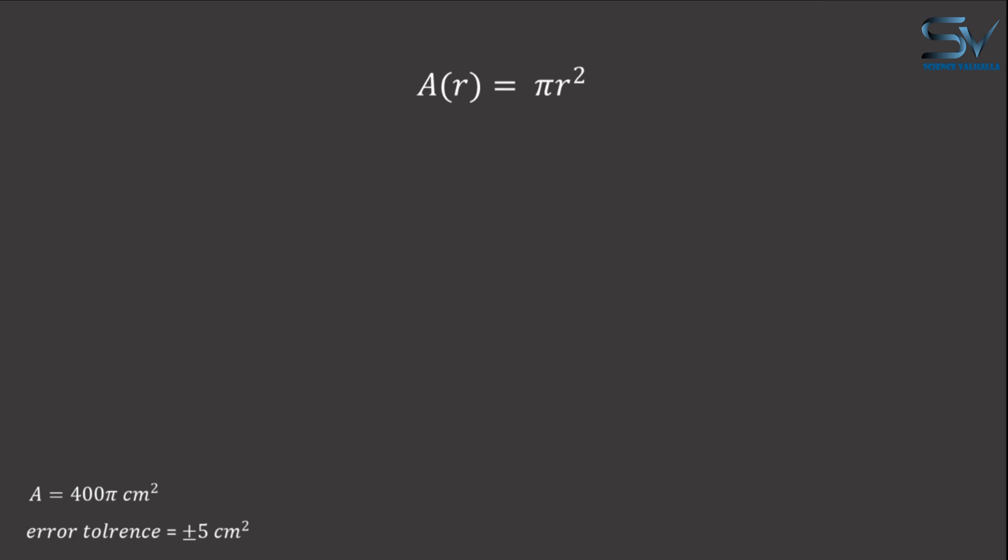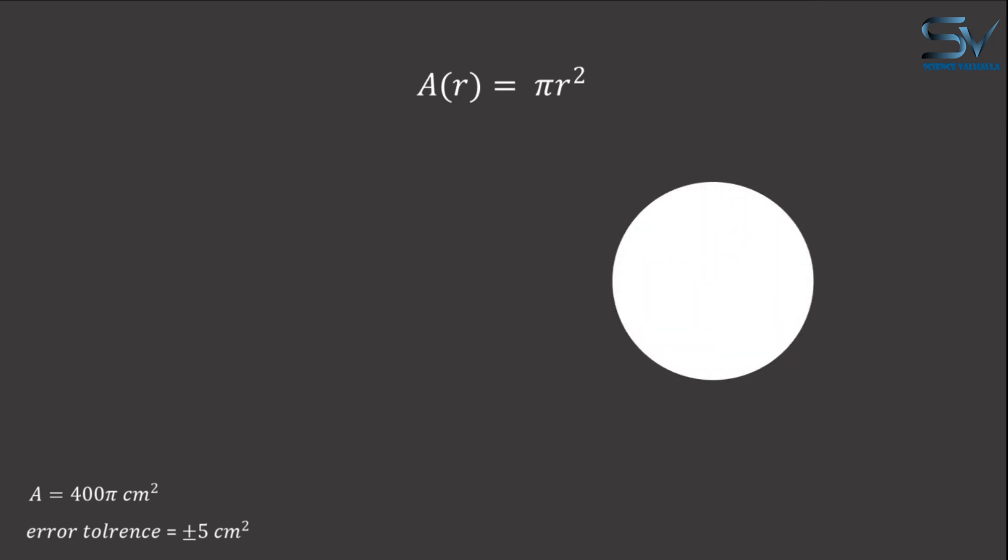Assume that this white shaded area depicts a disk with an area of 400π square centimeters. Plus 5 square centimeters error tolerance means that the area can be increased by 5 square centimeters.